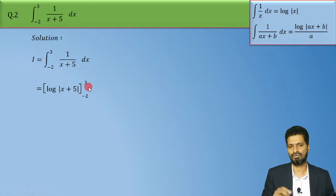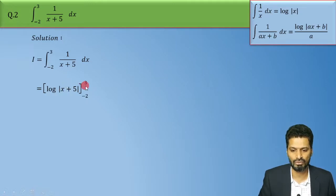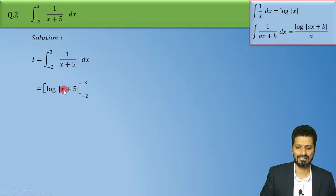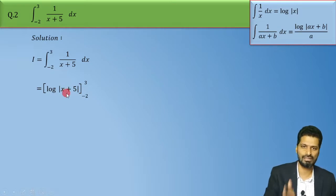Ab iske baad humko finally kya karna hai, jahaan bhi x dikhai de raha hai, waha par substitute karne hai, upper limit that is 3 and minus jahaan bhi x dikhai de raha, waha par substitute karne hai, lower limit that is minus 2. So upper limit minus lower limit.